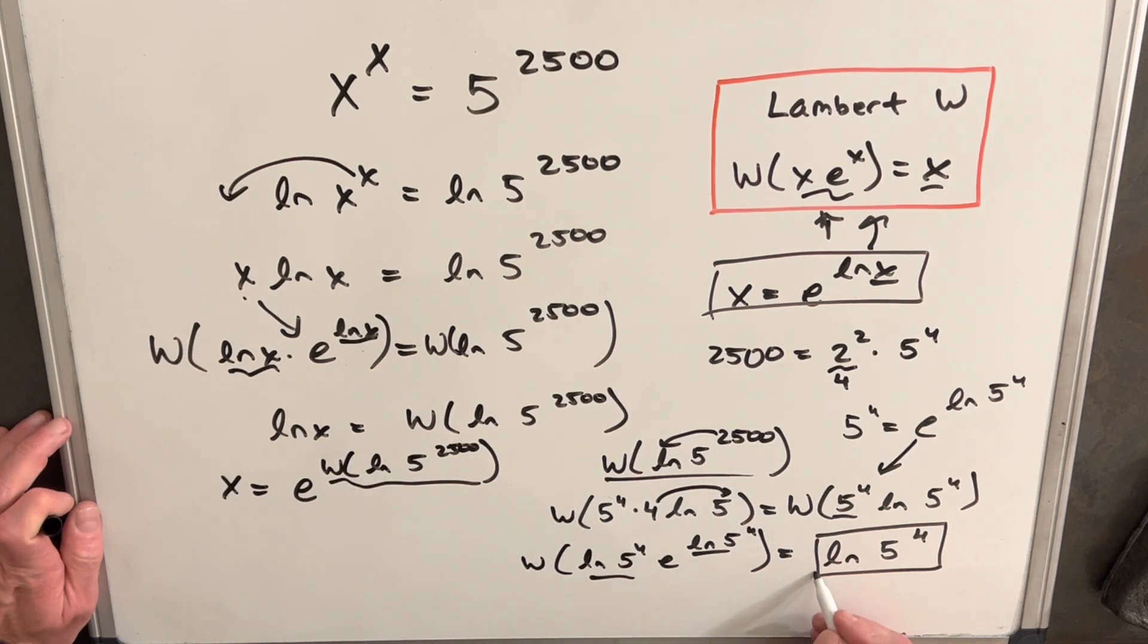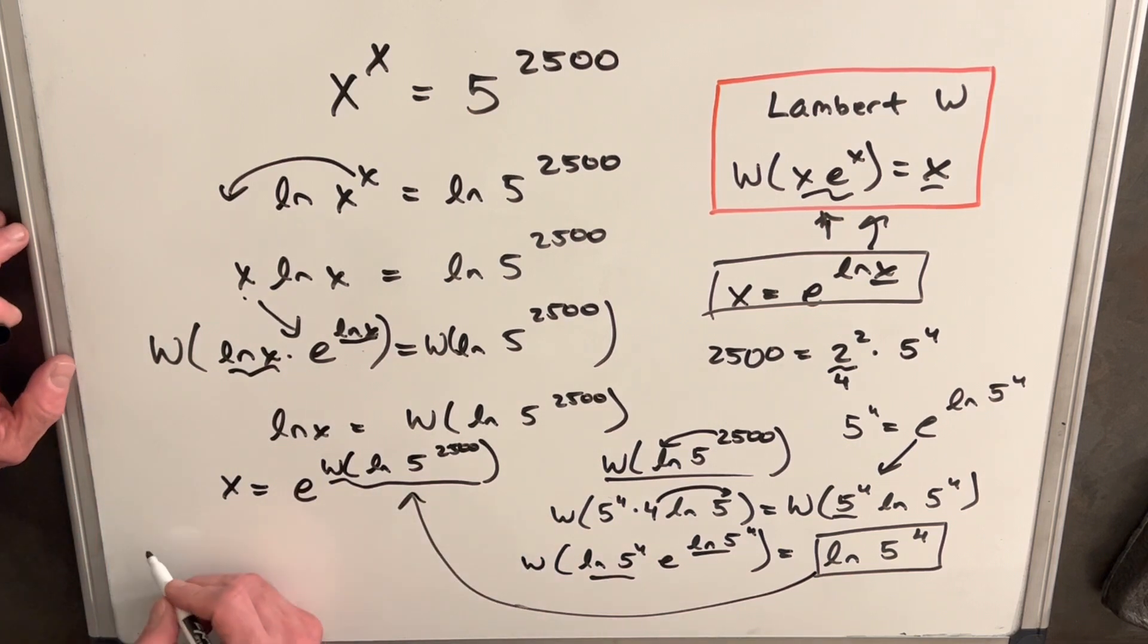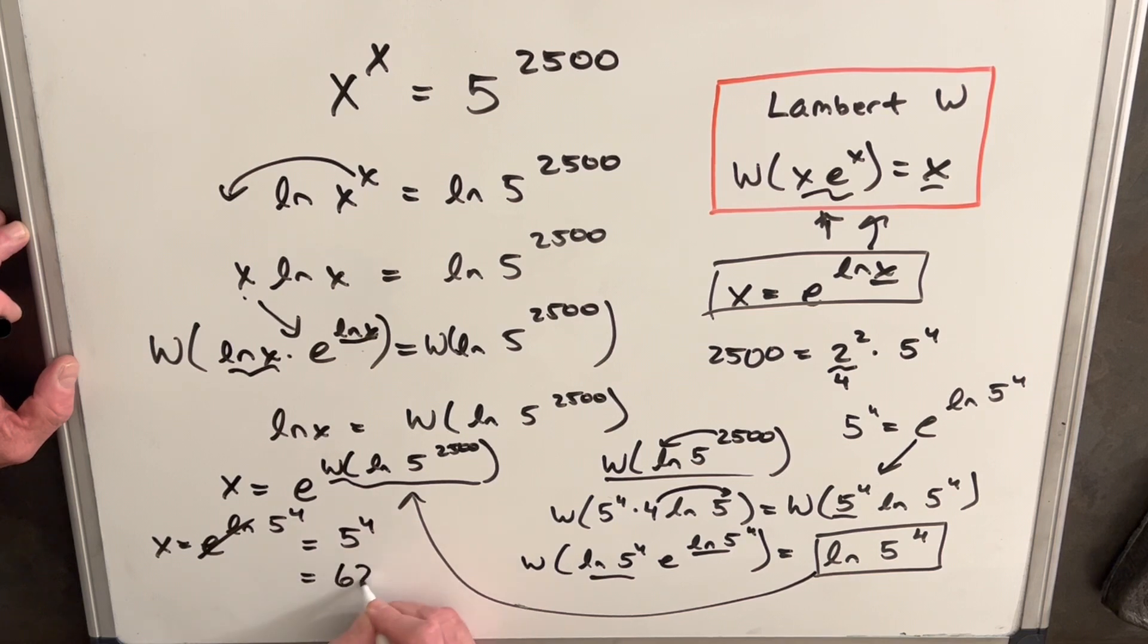Anyway, so let's bring that back over here. So we're left with x equals e to the ln 5 to the 4th. This essentially cancels. And we're just left with 5 to the 4th. And that's the same as 625.